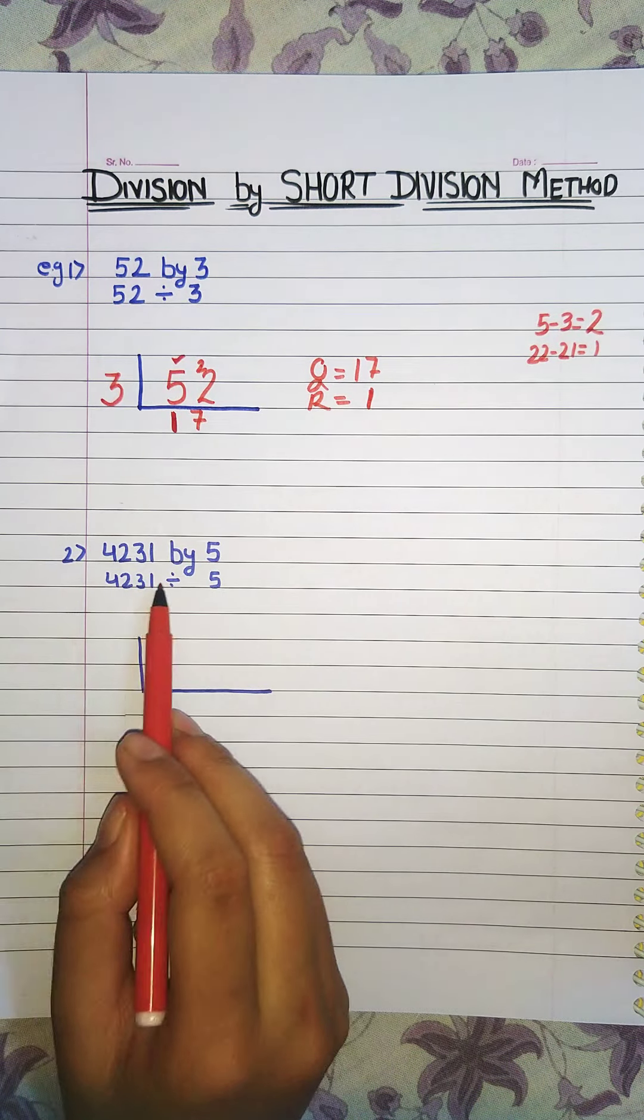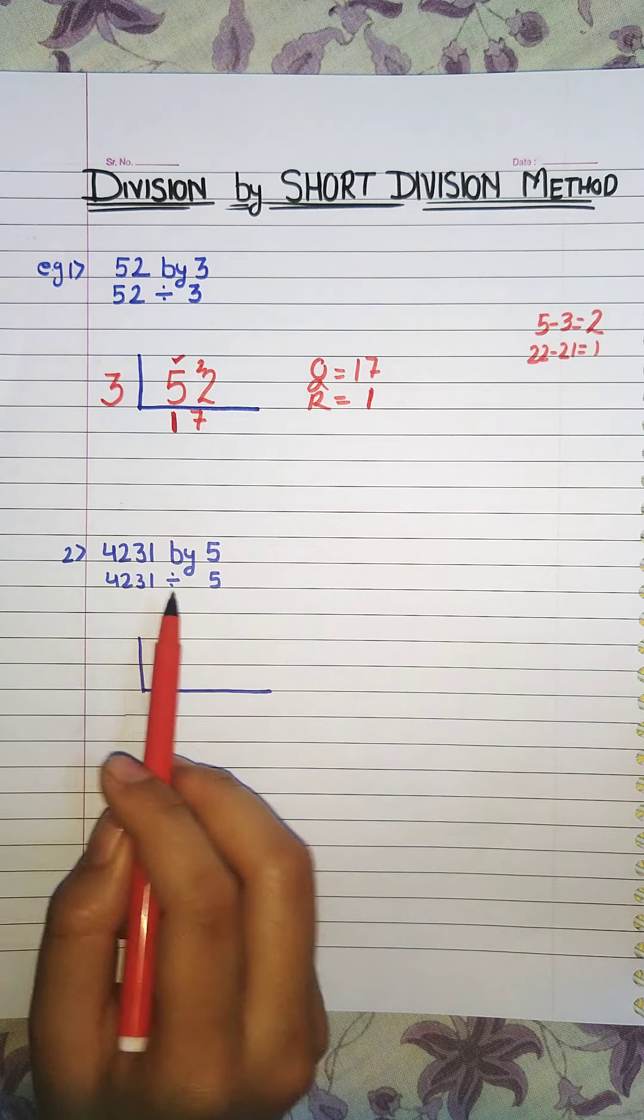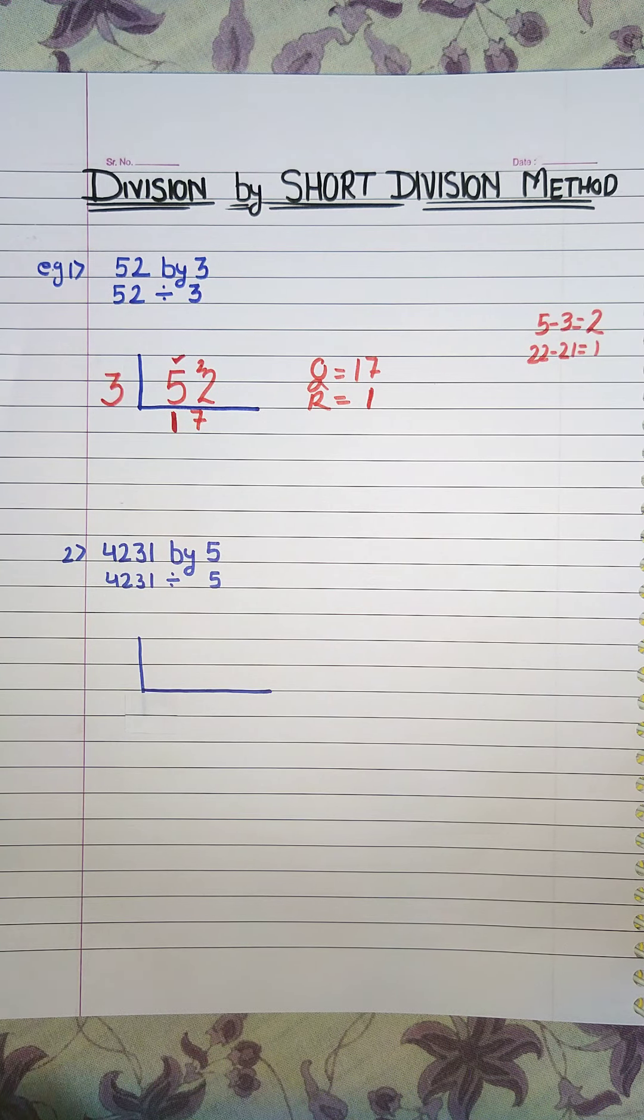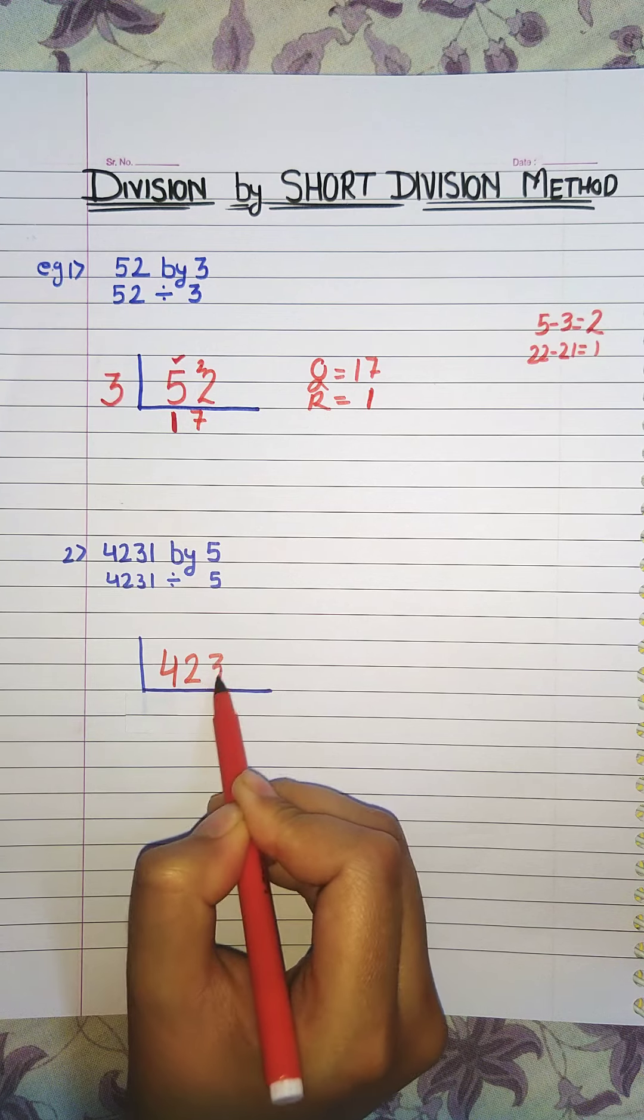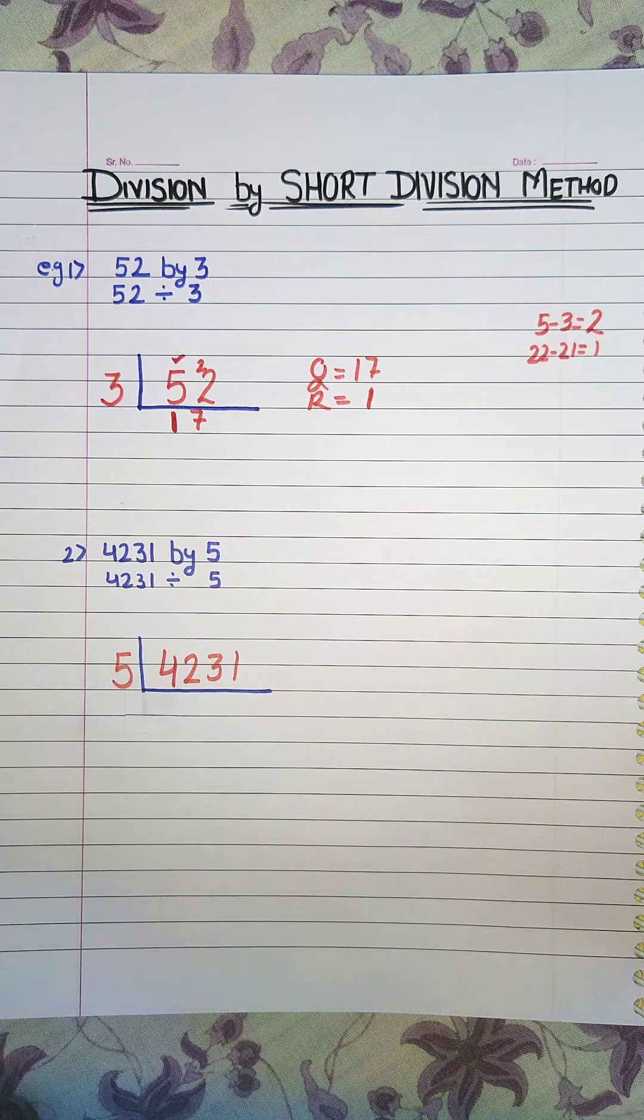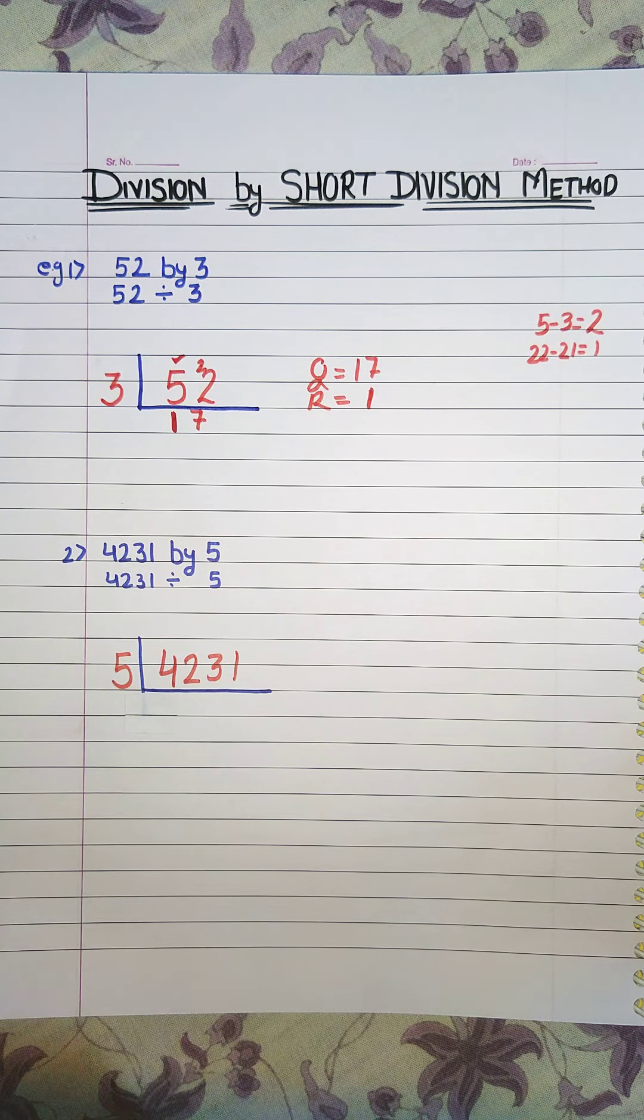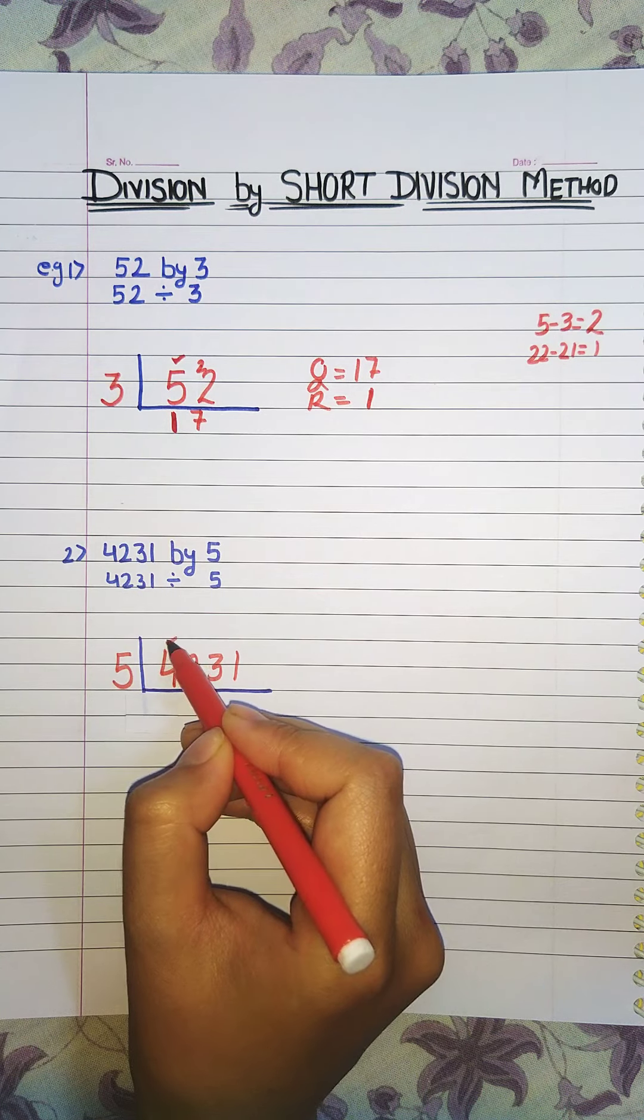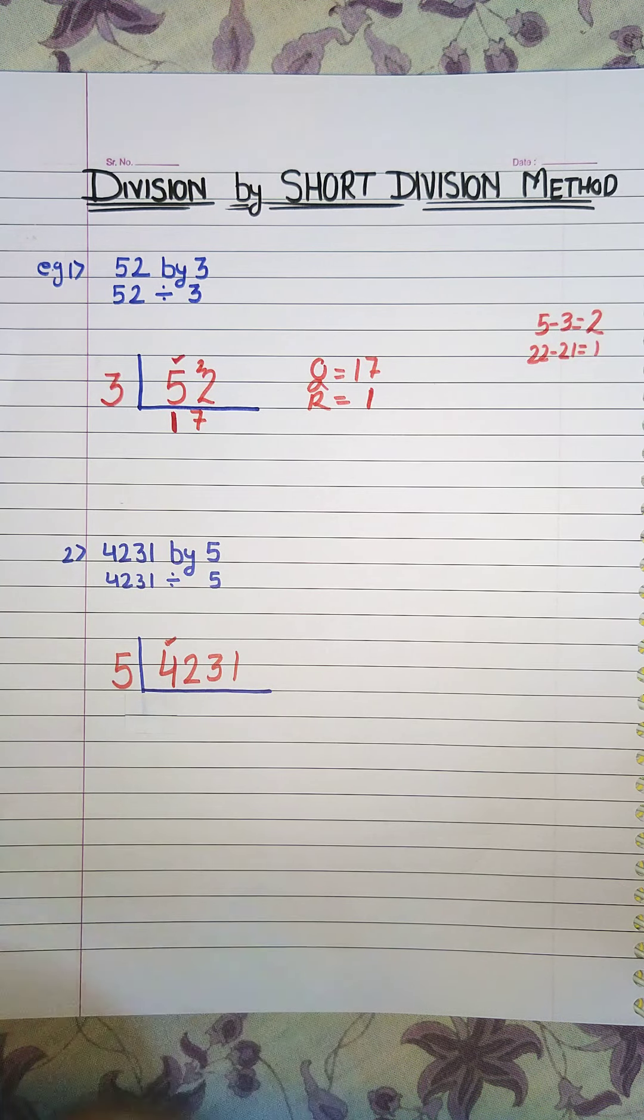Now example 2. Divide 4231 by 5. Here we will write dividend and here divisor. Now see first we will take 4 but 4 is less than 5. So we will take 42.